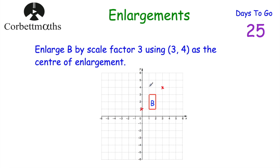For the next point, it's two left from the centre of enlargement and one down. Multiplying by three gives us six left and three down: one, two, three, four, five, six across and three down. For the next point, it's one left and three down from the centre, so multiplying by three gives three left and nine down.